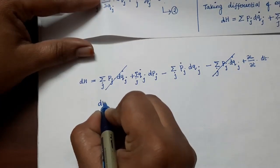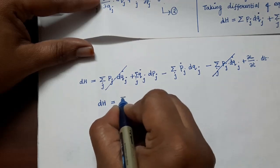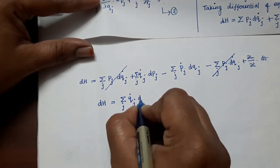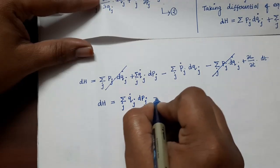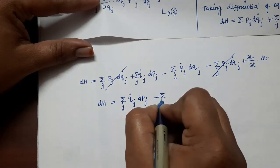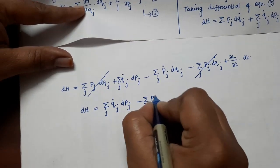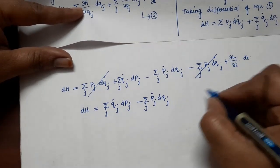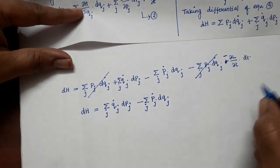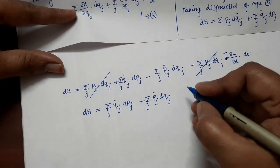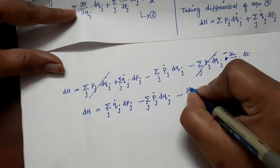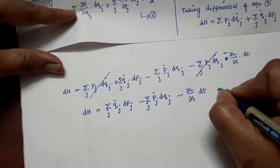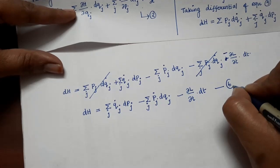After cancellation, what remains is: dH = Σⱼ qj_dot dpj − Σⱼ pj_dot dqj − (∂L/∂t) dt. Let us name this equation 6.